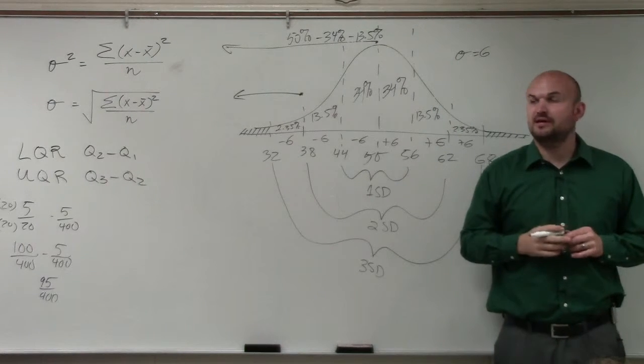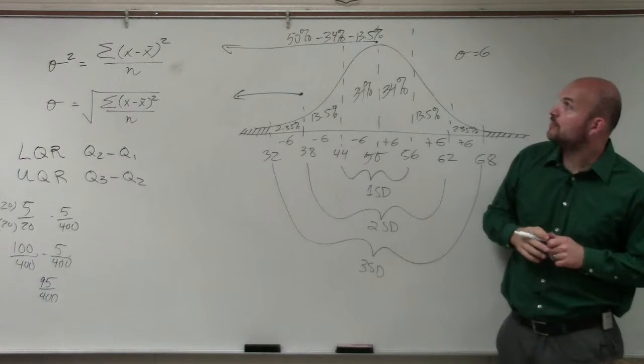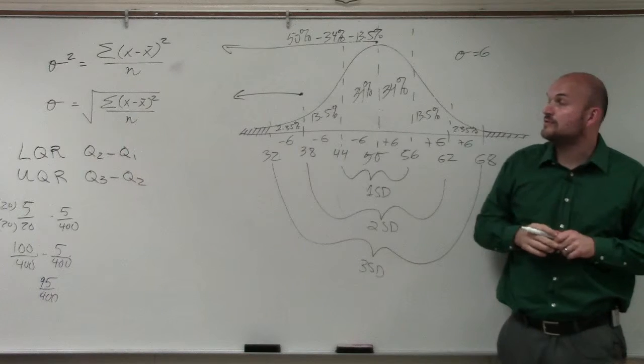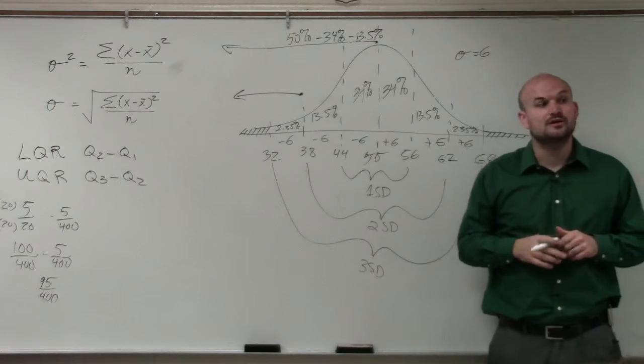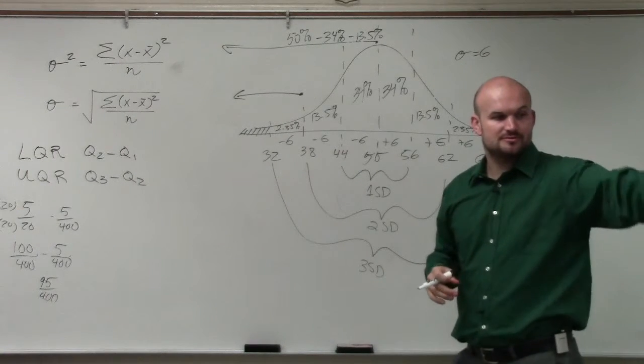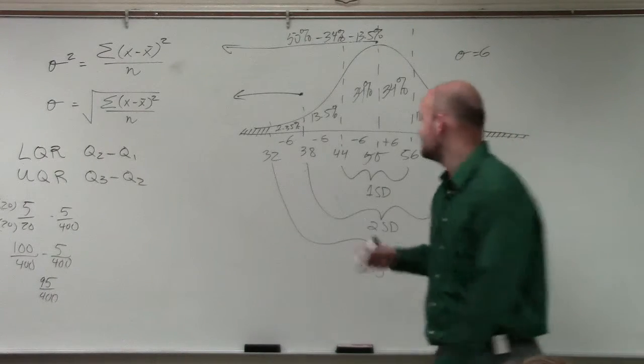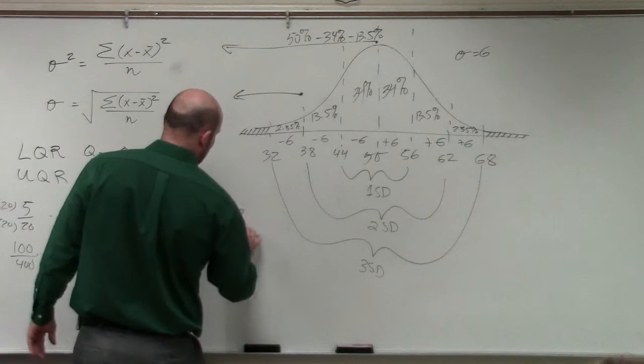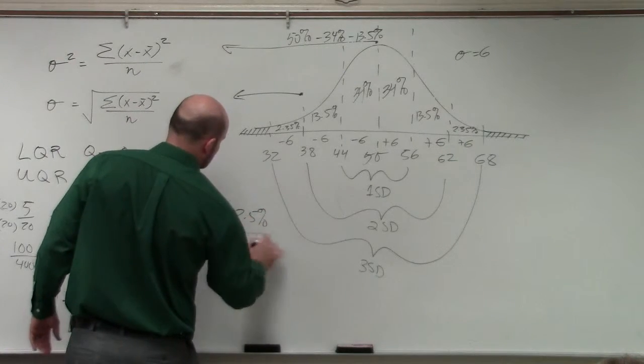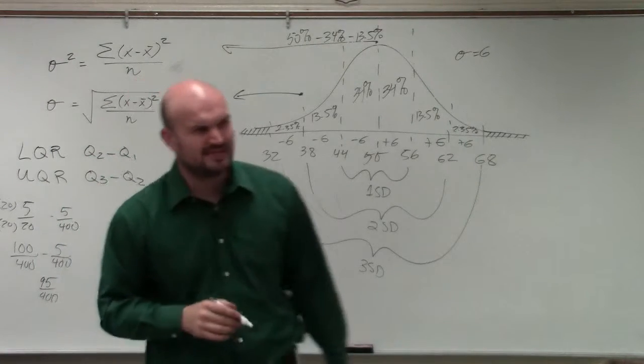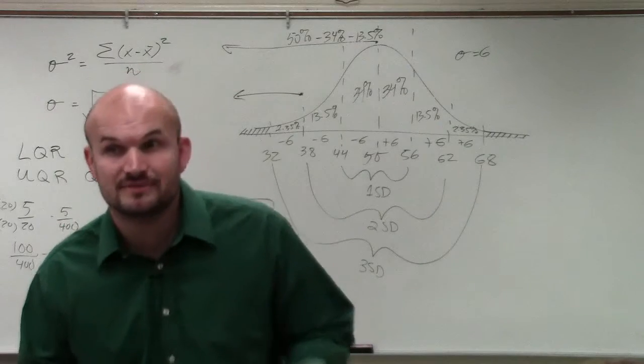So then that becomes 47.5%, so therefore, that would be 2.5%, 2.5%, 2.5%. There you go. So therefore, our percent would be 2.5%. Does that make sense? How it's not 2.35, it's 2.5%.